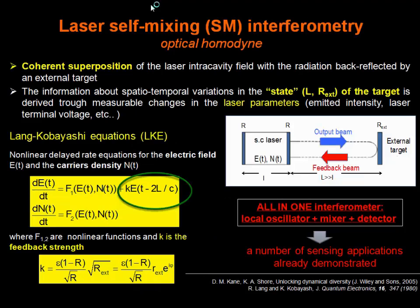Let me explain a few words about laser self-mixing interferometry. In a self-mixing interferometer, the radiation emitted by the laser source — in our case a semiconductor laser source — is allowed to interfere with the field that is back-reflected by an external target, and the resulting interferogram brings information about the external target status. More formally, the Lang-Kobayashi equations are a set of ordinary nonlinear delayed equations that describe the evolution of the field E inside the semiconductor laser and the carrier density N inside the laser.